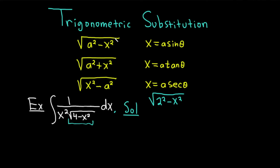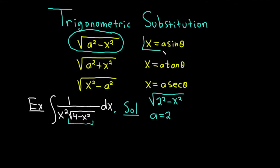Now you can see it matches the first formula, the square root of a squared minus x squared, with a equal to 2. So according to our formula, the substitution is x equal to a sine theta. In our case, that means x is equal to 2 sine theta.